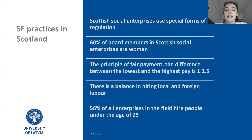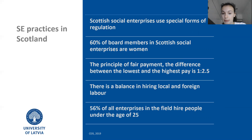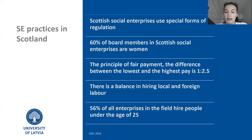Next, social enterprises in Scotland are progressive employers. They balance local and foreign labour. Also, 56% of all enterprises in this field hire young labour — people under the age of 25.